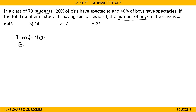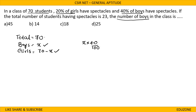Let the number of boys in the class be x. Then the number of girls would be 70 minus x. 40% of the boys wear spectacles, that is x into 40 by 100. Out of 70 minus x girls, 20% wear spectacles, that is (70 minus x) into 20 by 100. The total number of students wearing spectacles is 23, so boys plus girls wearing spectacles equals 23.